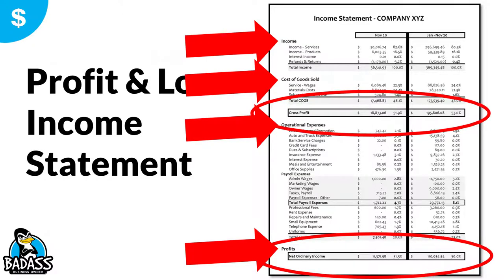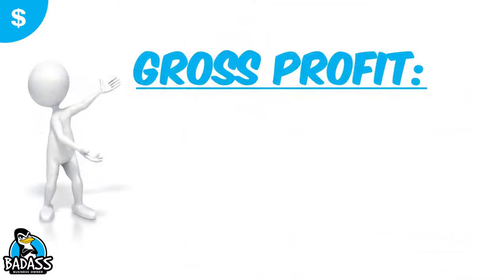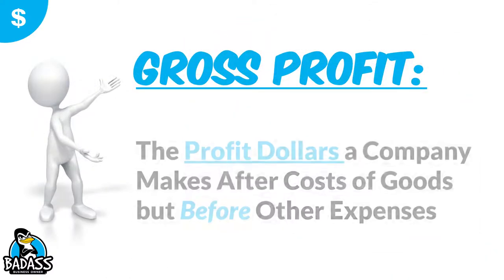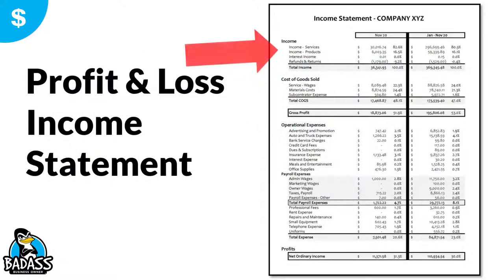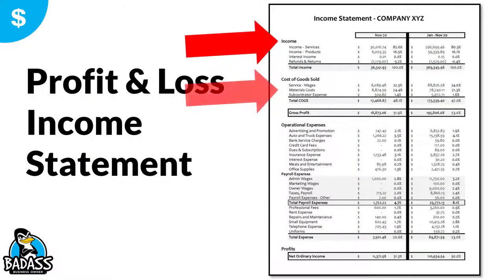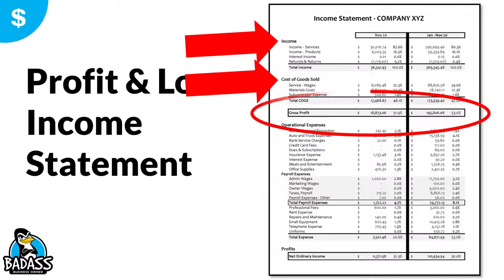Now let's take a look at what they both mean. Gross profit is the profit dollars a company makes after the cost of goods, but before the expenses. So you might recall over here on the profit and loss, you had your income, your cost of goods, and then you saw the gross profit. So all it is is sales minus cost of goods is going to give you your gross profit.